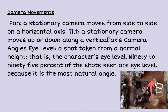A pan is a stationary camera that moves from side to side along a horizontal axis. A tilt is a stationary camera that moves up and down along a vertical axis. A camera angle that is eye level is a shot taken from a normal height — that character's eye level. It's a basic concept, but 90 to 95 percent of the shots seen in film are eye level because it's the most natural angle. Eye level shots are the most common.